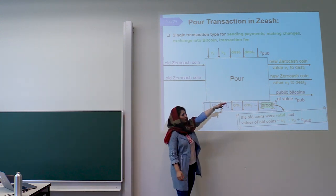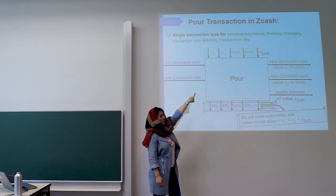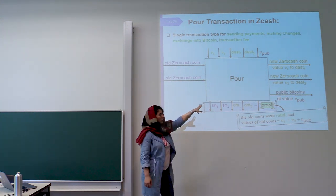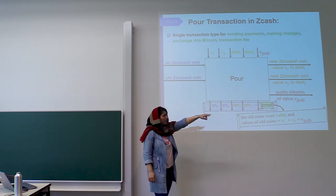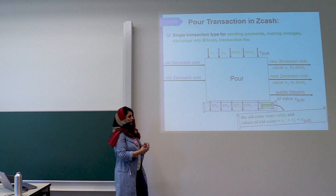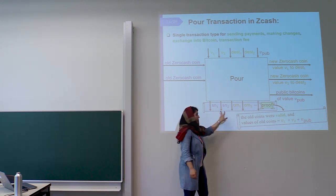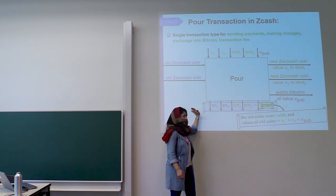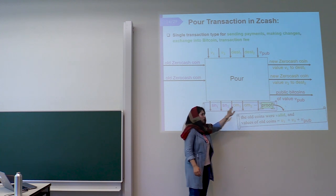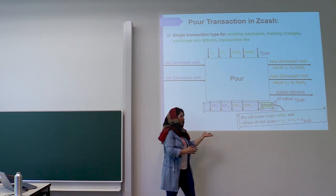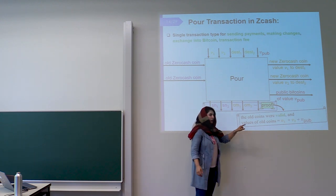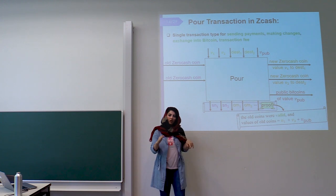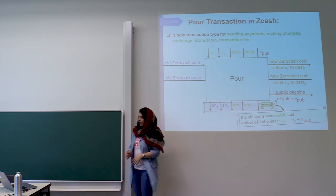Now we can see all the details of the real Pour algorithm in Zcash. Two old coins come in, two new coins go out. Value V1 and destination 1 (the public address) go into coin 1, and V2 and destination 2 go into coin 2. V_pub, the public value, goes to the public Bitcoin address for transaction fees. The old coin serial numbers go into the list of spent coins, the new coin commitments go into the unspent coins list, and the proof states that the old coins were valid and the values of the old coins equal the values of the new coins plus V_pub.